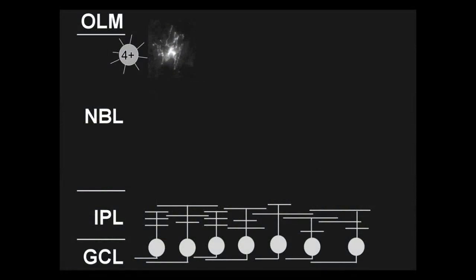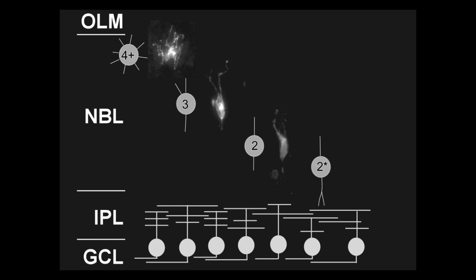Amacrine cell precursors first appear at the top of the neuroblastic layer, and at this stage they're multipolar, extending four or more neurites. As these precursors migrate towards the inner plexiform layer, they gradually lose these processes. We often see a bipolar morphology as the cells have contacted the boundary between the inner nuclear layer and the inner plexiform layer. The mature amacrine cell extends a single primary dendrite that stratifies within the inner plexiform layer.